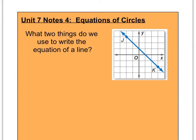Before we do that, I want you to think about when you learned how to write the equation for a line. When you write the equation for a line, you need two things. Do you remember this equation y equals mx plus b? This is an equation for a line called slope-intercept form. What you need to write this equation is the slope and the y-intercept. If you have these two things, you can write the equation for the line.